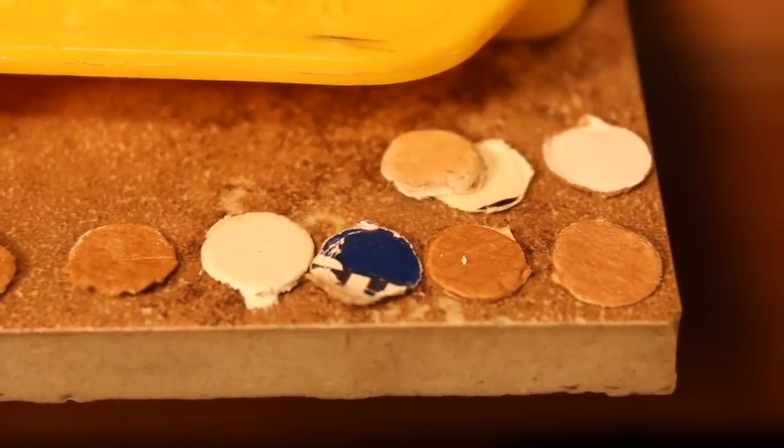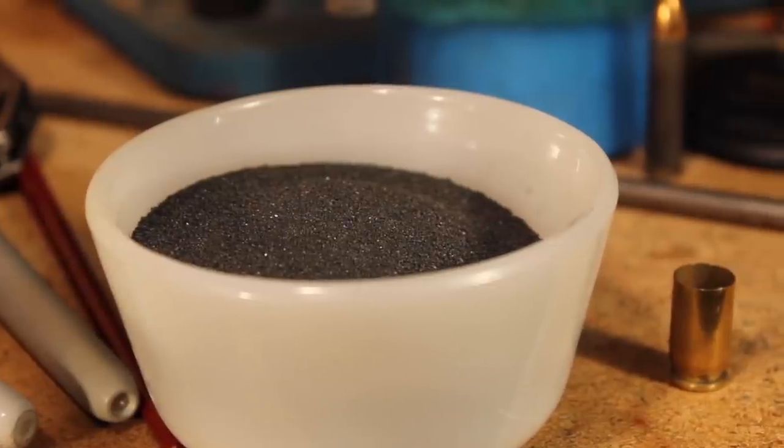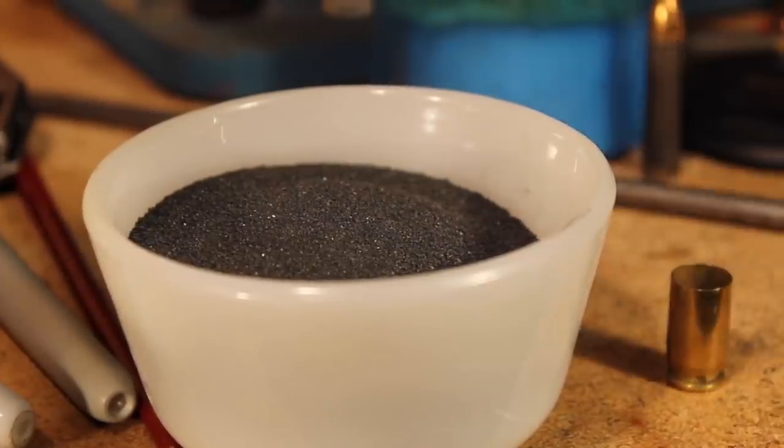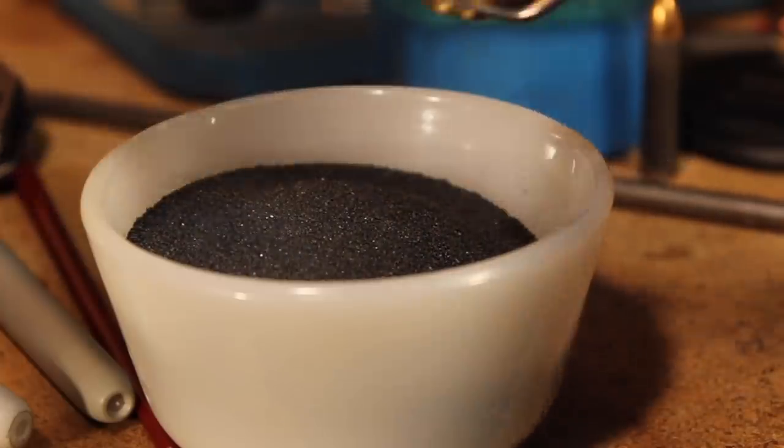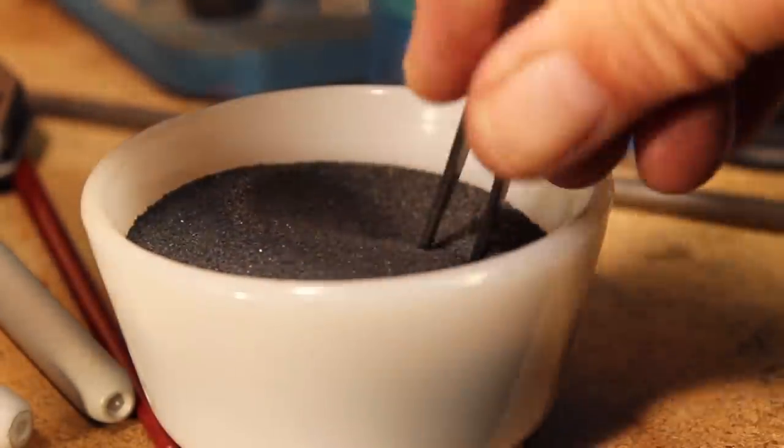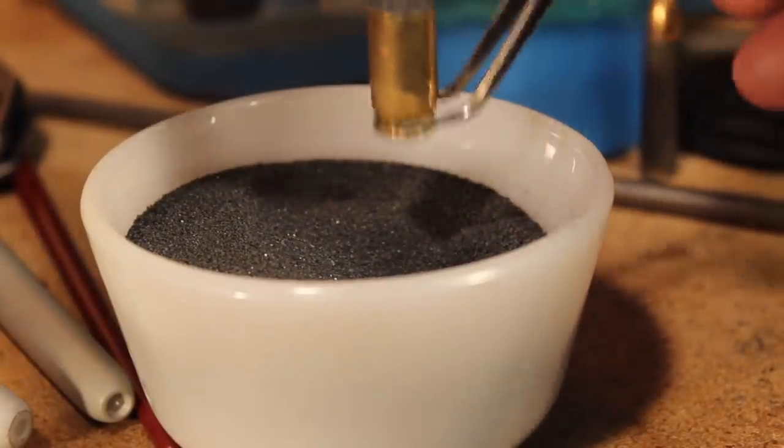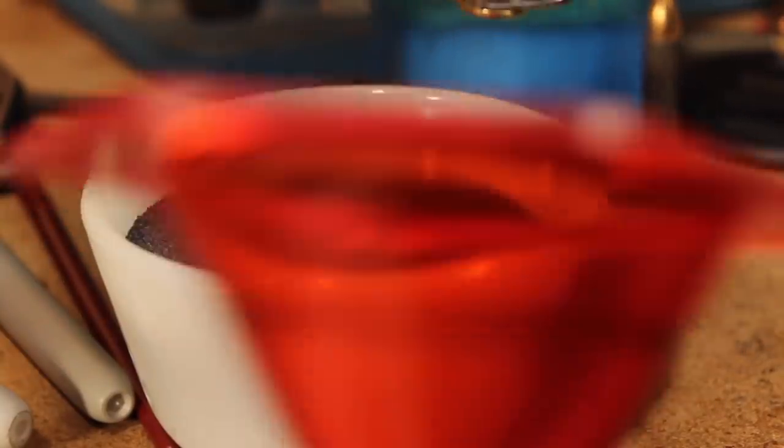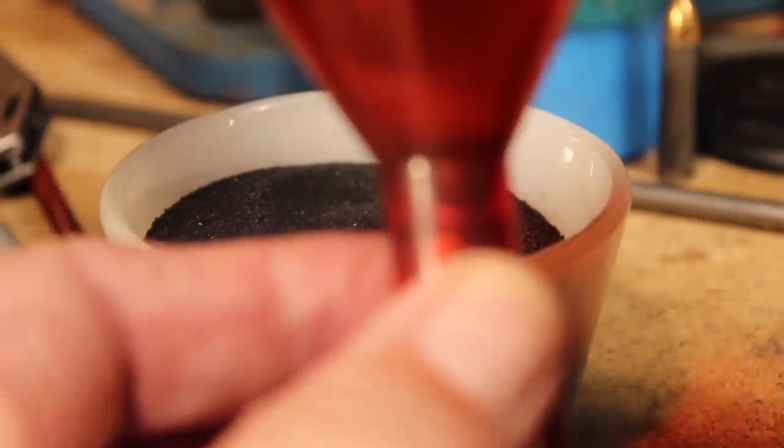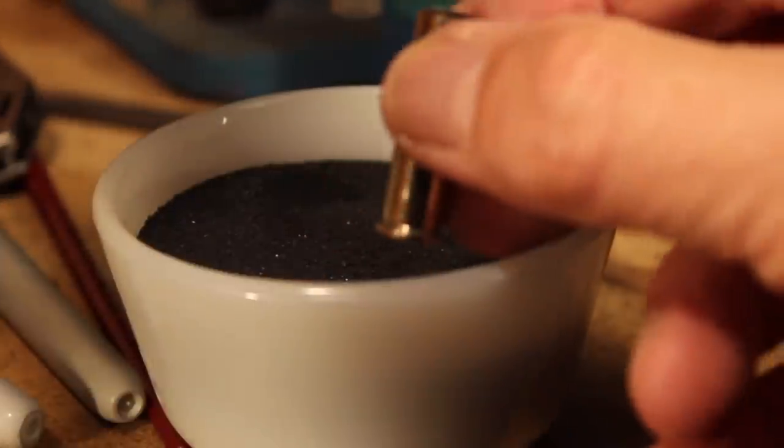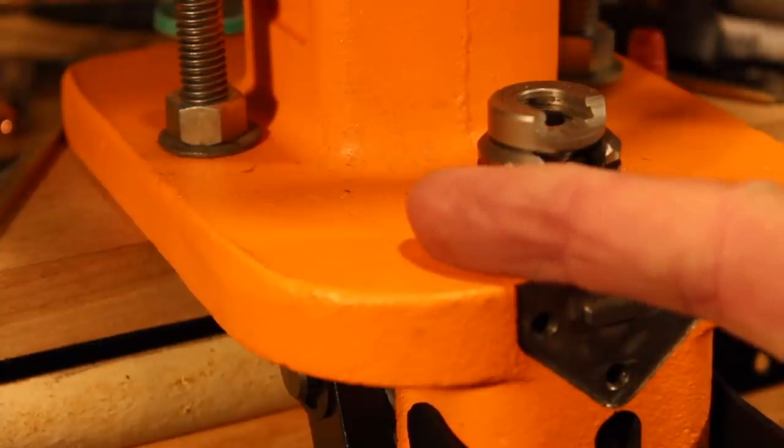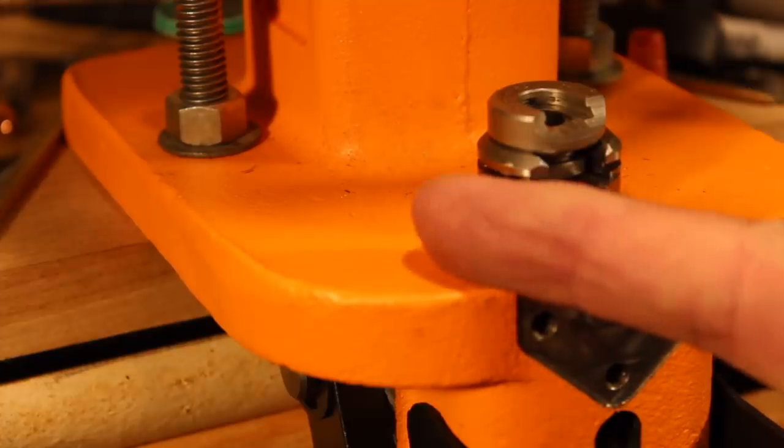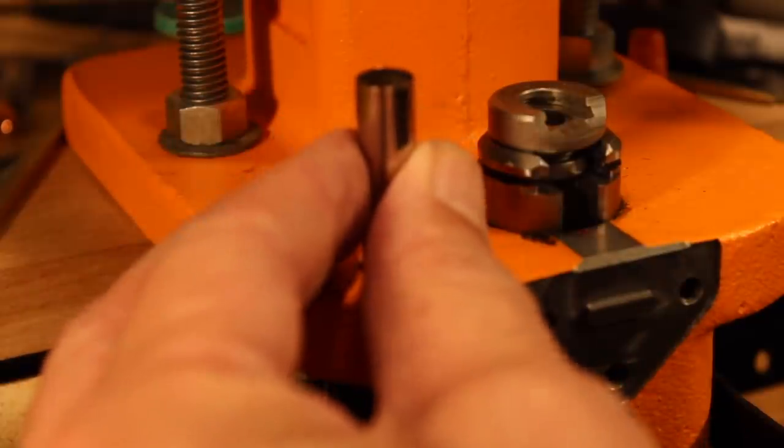So there you see the wads punched out and they're just fine. So now measuring the triple seven 3FG by volume is simple. Take our measure. Dip it down into the powder. Bring it straight up. Level it off like this. And then pour it into the case like this. We just repeat that as many times as you want. I hope you noticed the orange of the Lyman All-American 8 press. How appropriate for Halloween.